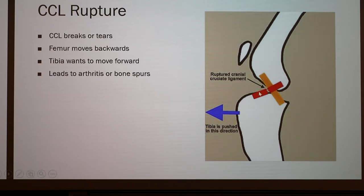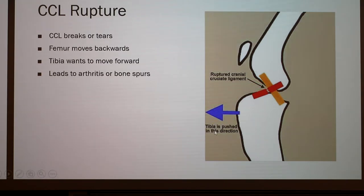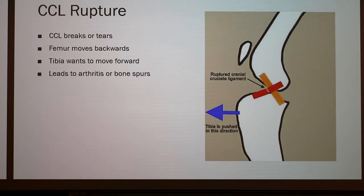A CCL rupture is when that red ligament breaks or tears. When that happens, the femur is going to want to move backwards and the tibia is going to want to move forward, because the ligament is no longer holding the femur forward and the tibia back. They're going to want to separate — this can be known as a cranial tibial subluxation, or partial dislocation — and this can lead to arthritis or bone spurs, which are tiny growths that develop on the edge of a bone. Both can be extremely painful.